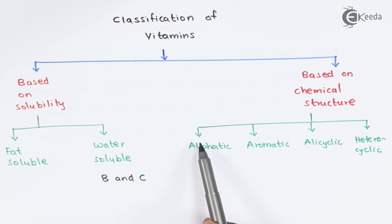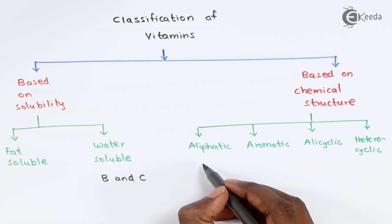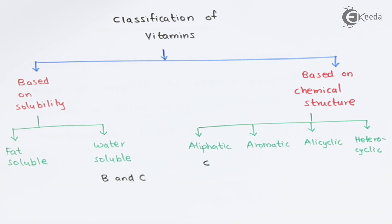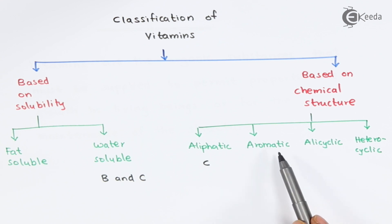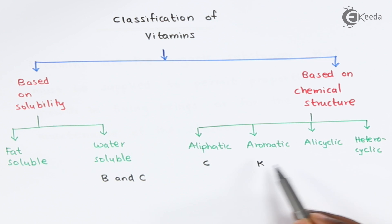If we talk about aliphatic vitamins, they have an aliphatic structure, and the example is vitamin C — so vitamin C is an aliphatic vitamin. Talking about aromatic vitamins: vitamin K, which plays a very vital role in blood clotting, is the aromatic vitamin.